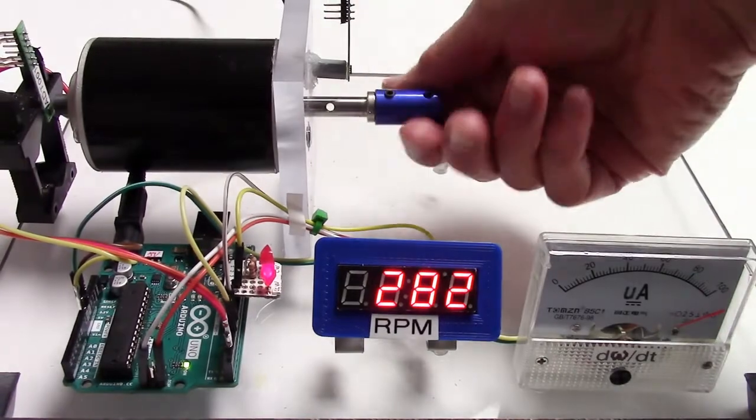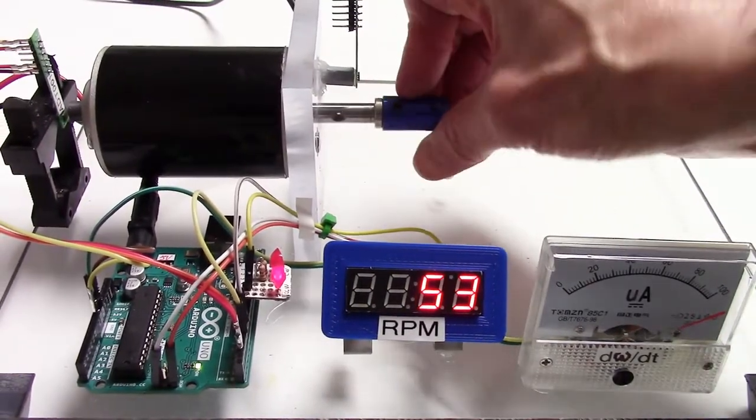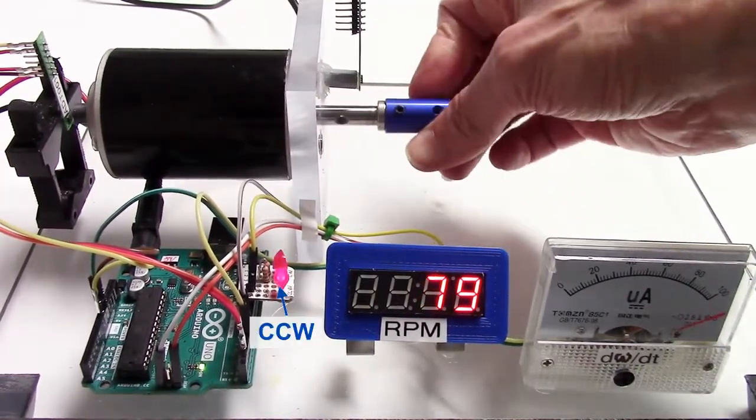The sensor provides direction information. These two LEDs indicate clockwise and counterclockwise.